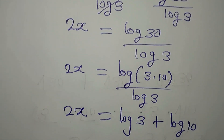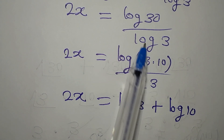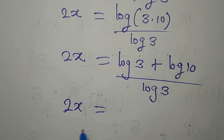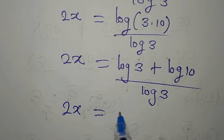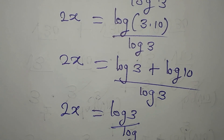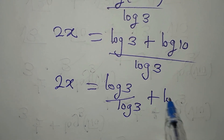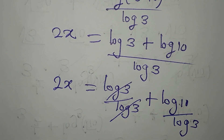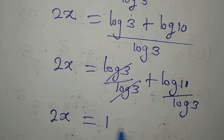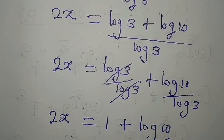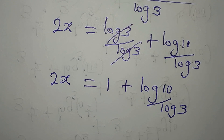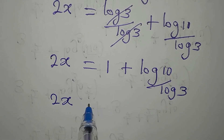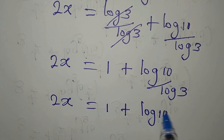Now log 3 plus log 10 equals log 30, and we divide all of that by log 3. So we have 2x equal to log 3 divided by log 3 plus log 10 divided by log 3. Log 3 over log 3 cancels to 1, so 2x equals 1 plus log 10 divided by log 3. Applying the change of base law, that becomes 1 plus log 10 to base 3.